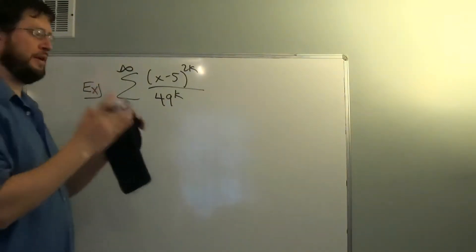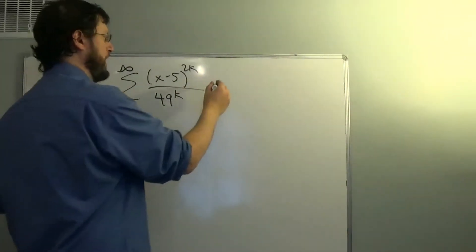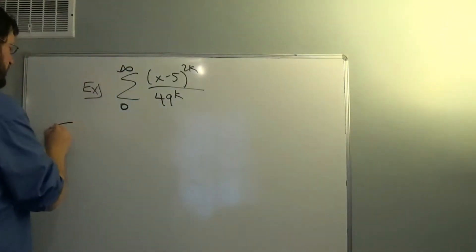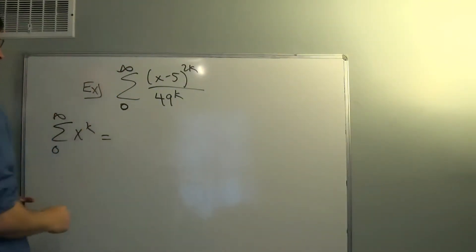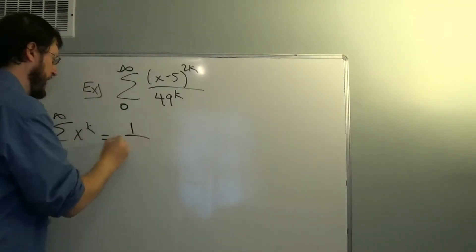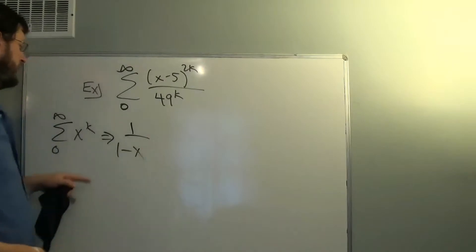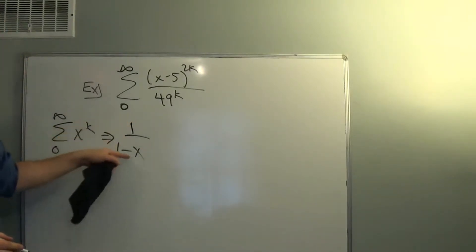If I can write things as something to the k, we can use it as a power series representation for x to the k. The function that has a power series of x to the k is 1 over 1 minus x.